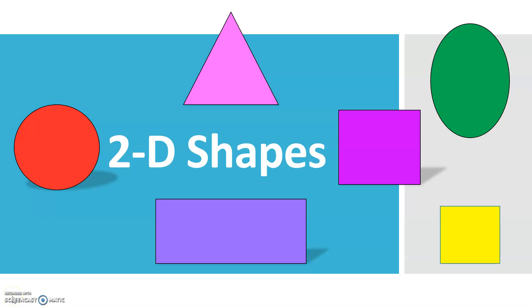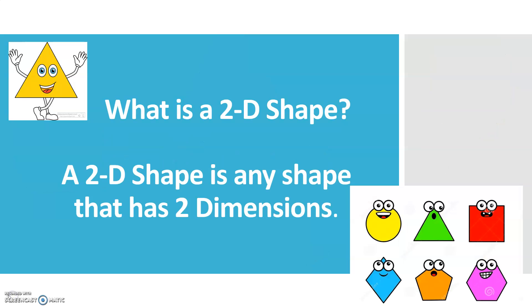Hello everybody! Today we're going to learn about 2D shapes. So what is a 2D shape? Well, a 2D shape is any shape that has two dimensions. One way of thinking of a 2D shape is any shape that is flat, such as a sheet of paper.